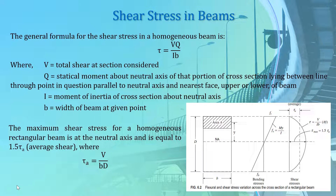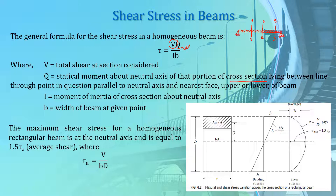The general formula for shear stress in a homogeneous beam, which you learned in strength of materials, is τ = VQ / (Ib), where V is the total shear force at the section considered. For example, for a simply supported beam subjected to a uniformly distributed load, V is the shear force at any section where you want to calculate the shear stress. Q is the statical moment about the neutral axis of the portion of the cross-section lying between the point in question and the nearest face of the beam.